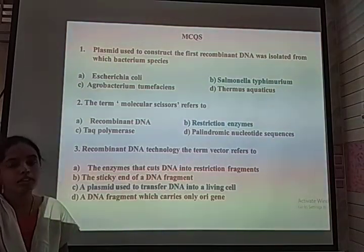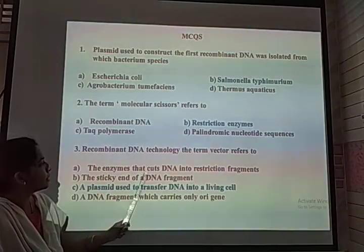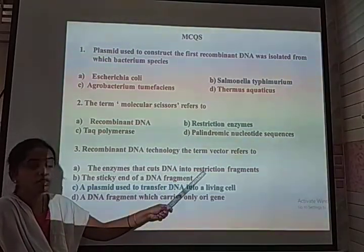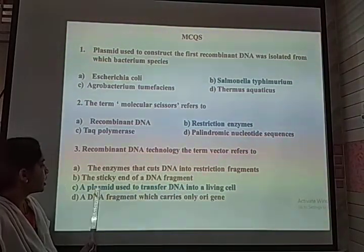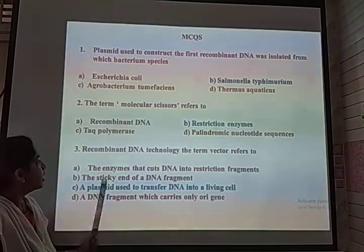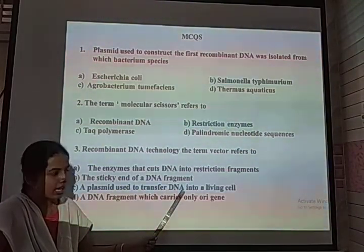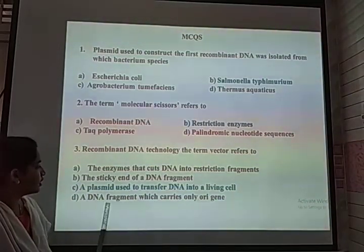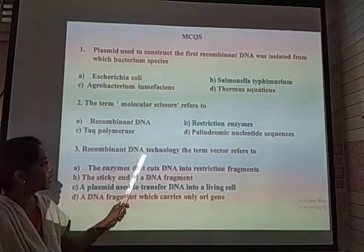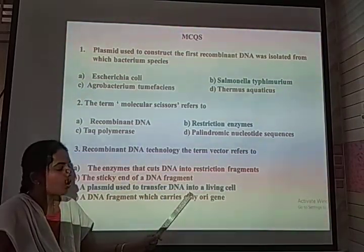The term 'vector' refers to a vehicle helpful for transforming the desired gene to the host. The enzyme that cuts the DNA into restriction fragments is the restriction enzyme, used to cut and produce sticky ends. The DNA fragment which carries only the origin of replication — here the vectors that are used are called plasmids — is helpful for transforming the DNA into a host cell.